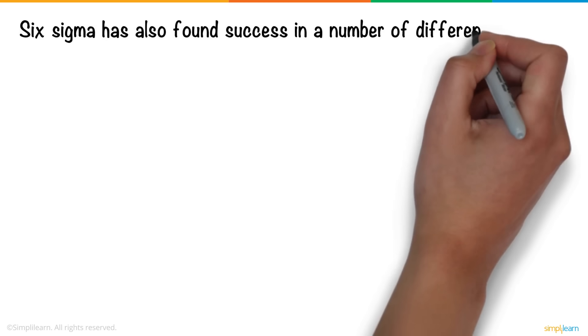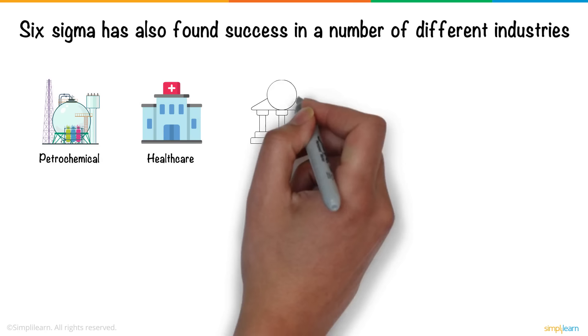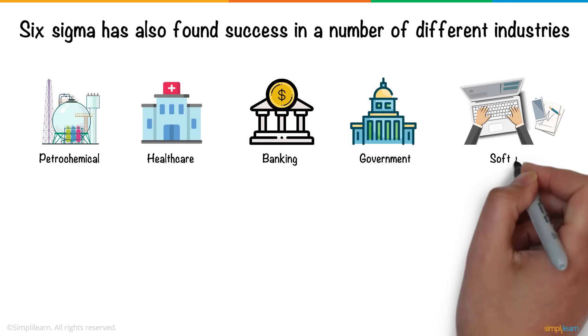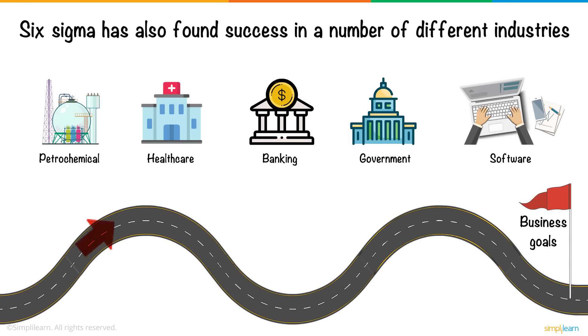Six Sigma has also found success in a number of different industries. The petrochemical, healthcare, banking, government, and software are some of the industries that have utilized the concepts of Six Sigma to achieve their business goals.